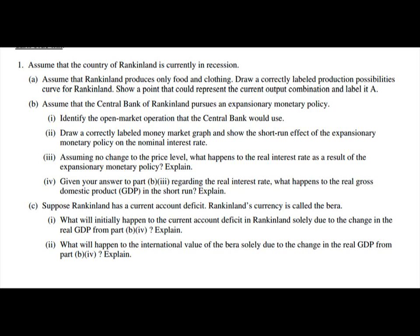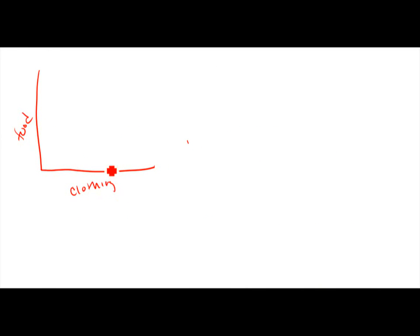In order to write on the screen, I'm going to bounce this over to PowerPoint. The question says: assume the country of Rankinland is currently in a recession — that's a really important phrase. Part A says: assume Rankinland produces only food and clothing; draw a correctly labeled production possibilities curve for Rankinland and show the point that could represent the current output, labeled A. For part A, you draw your PPC curve with food and clothing, draw that concave curve, and a recession would be a point under the line.